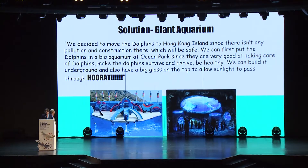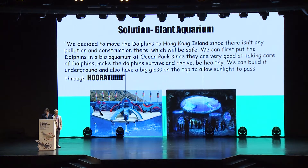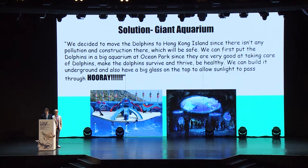In another solution, a giant aquarium was to be built — with perhaps Ocean Park being a part of the solution — where the dolphins could move to and live. Again, student questions included: how are 61 dolphins going to fit, how do you move the dolphins, and how will you feed the calves when their milk is still toxic?